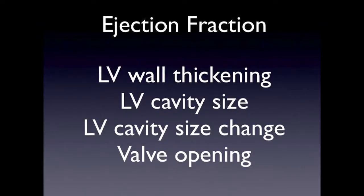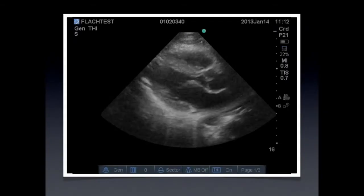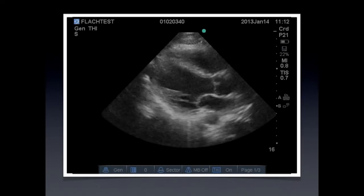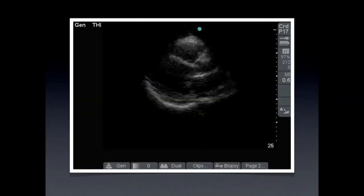You have numerous ways of calculating ejection fraction with formulas in the lab, but we're going to use some visual cues when looking at ultrasound. We're going to look at left ventricular wall thickening, left ventricular cavity size, cavity size change, and valve opening. You should have left ventricular wall thickening of about 40% — the muscle should really be working. Also, we're going to look at the left ventricular cavity size; it shouldn't be more than 6 centimeters.